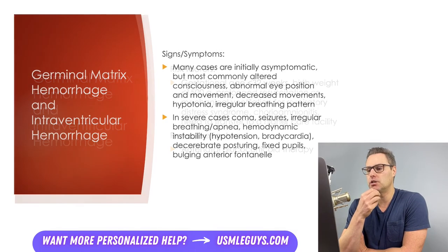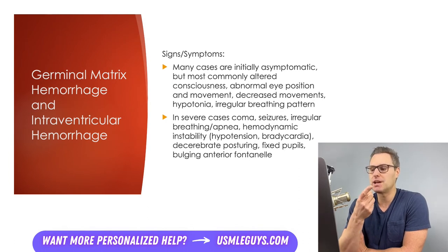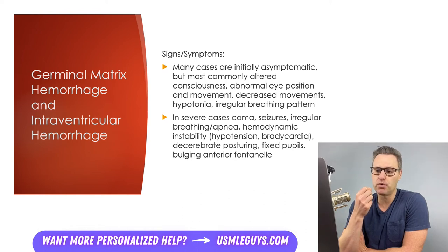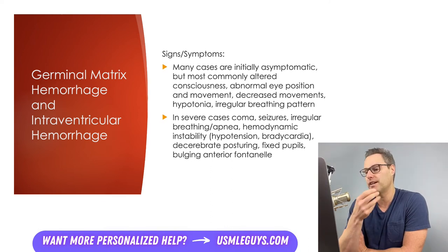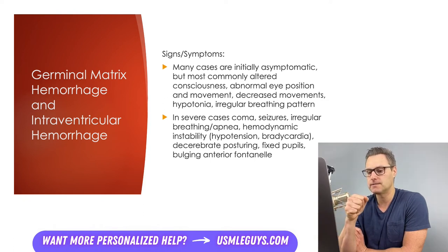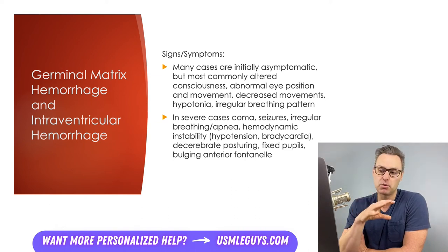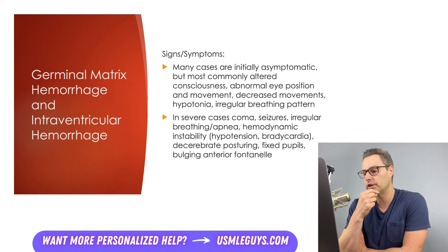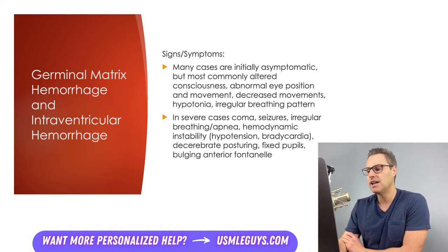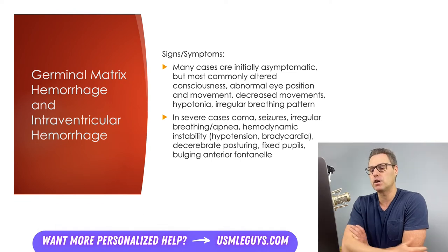Some patients with this condition might initially be asymptomatic, but most will present with altered consciousness, abnormal eye position and movements, and a decrease in both spontaneous movements and movements in response to a stimulus. Patients may also show hypotonia or have irregular breathing patterns, with symptoms usually arising over hours to days. In severe cases, symptoms develop within minutes to hours and can include coma, seizures, irregular breathing, apnea, hemodynamic instability characterized by hypotension and bradycardia, decerebrate posturing, fixed pupils or other cranial nerve abnormalities, and a bulging anterior fontanelle.